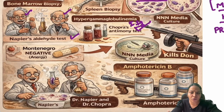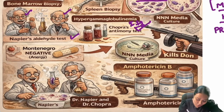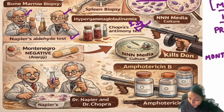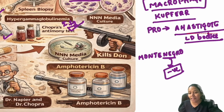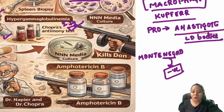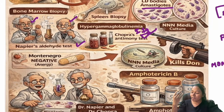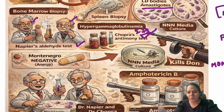The doctors know immunoglobulin is increased but need more information, so they perform the Montenegro test. In the test name, 'neg' is present — so it gives a negative result, because cell-mediated immunity is suppressed. Montenegro test is negative in visceral leishmaniasis. The aldehyde and antimony tests are now of historical importance only.